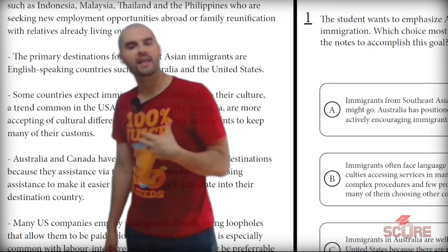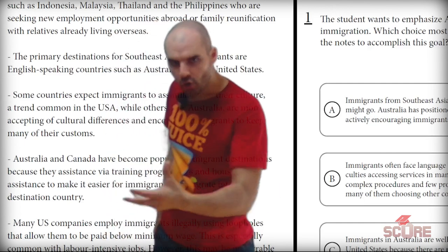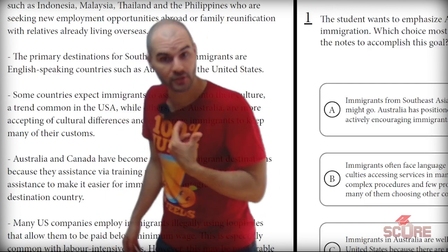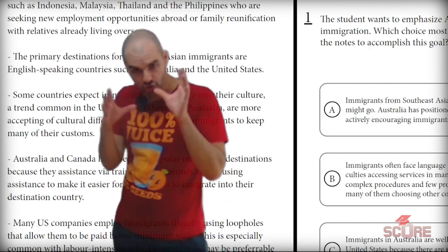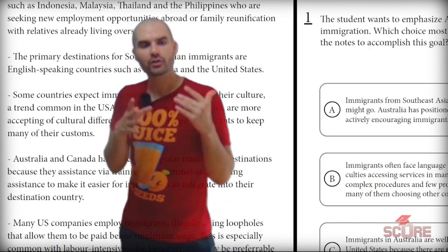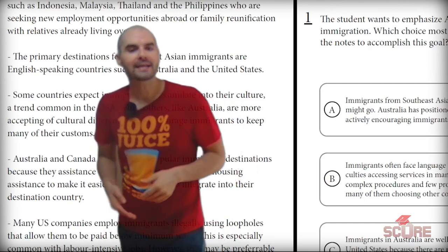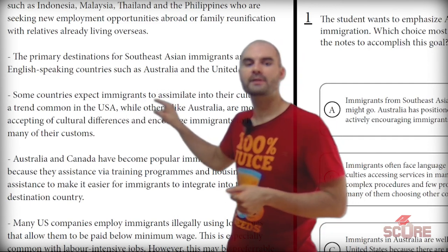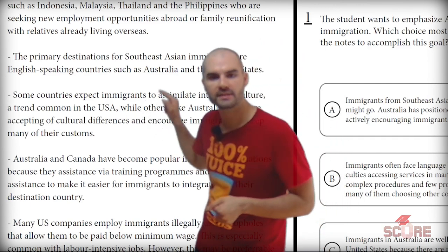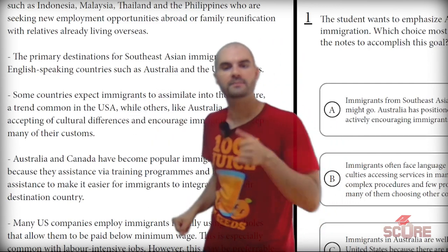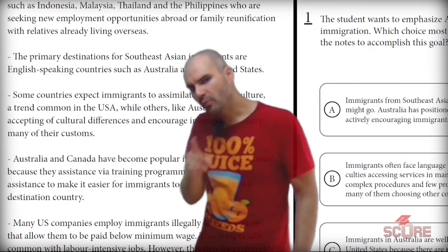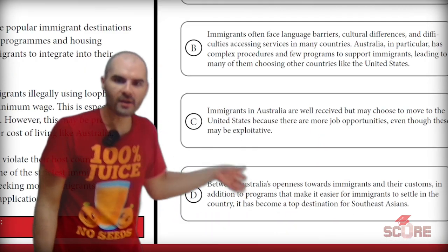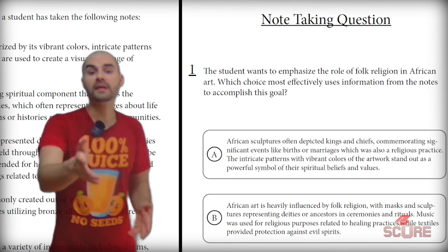Does it say anything about Australia being open towards immigrants and their customs or having programs to support them? I can search for the word Australia to find that information. I see here in this note that it says Australia is more accepting of cultural differences and encourages immigrants to keep many of their customs. So right there I have two notes that support this answer, and that's why we're marking D.